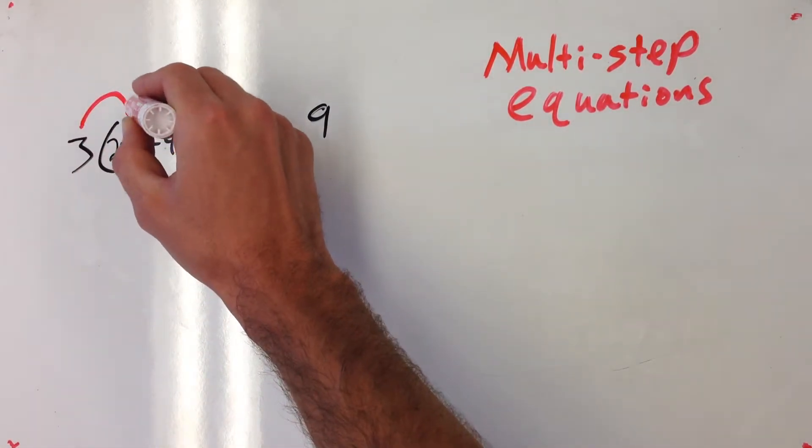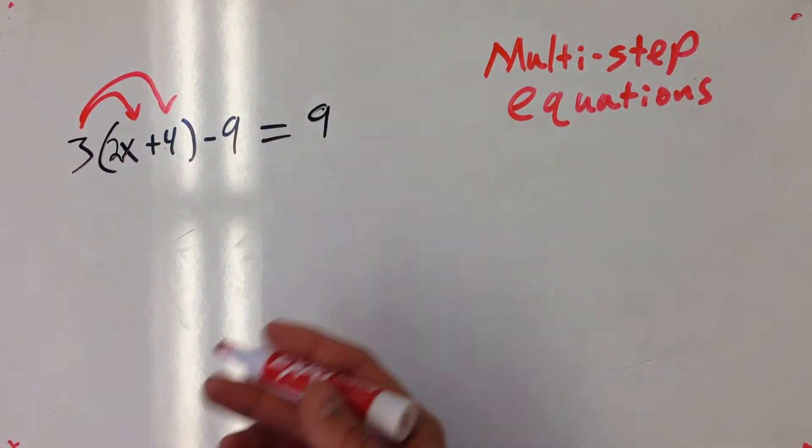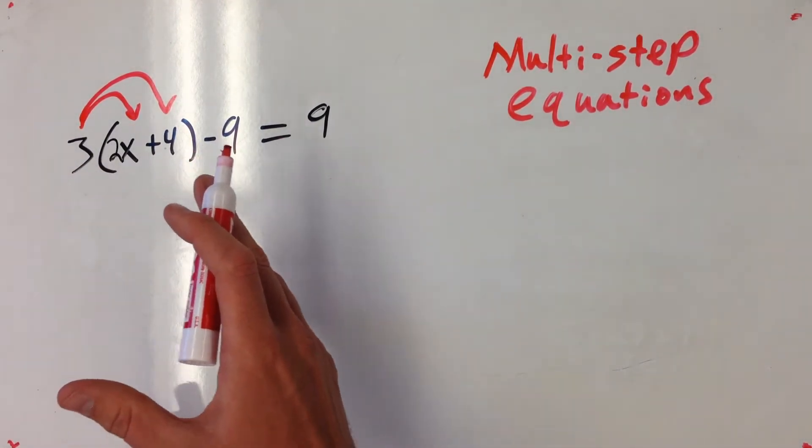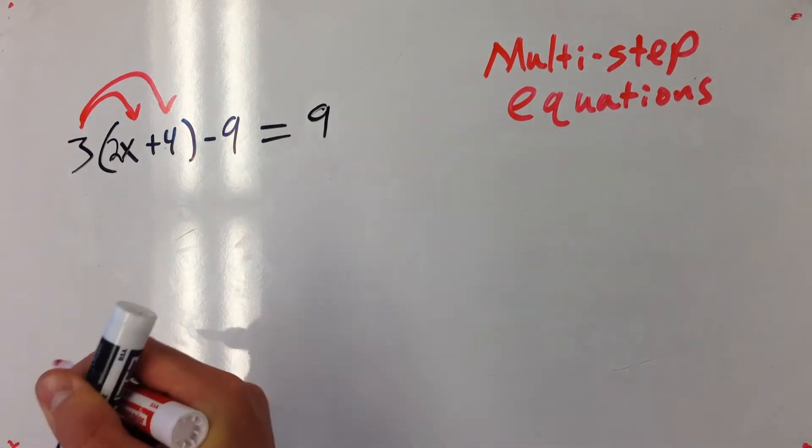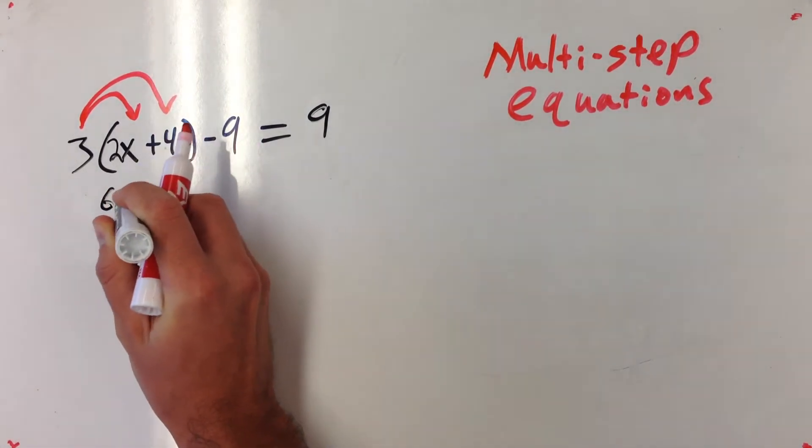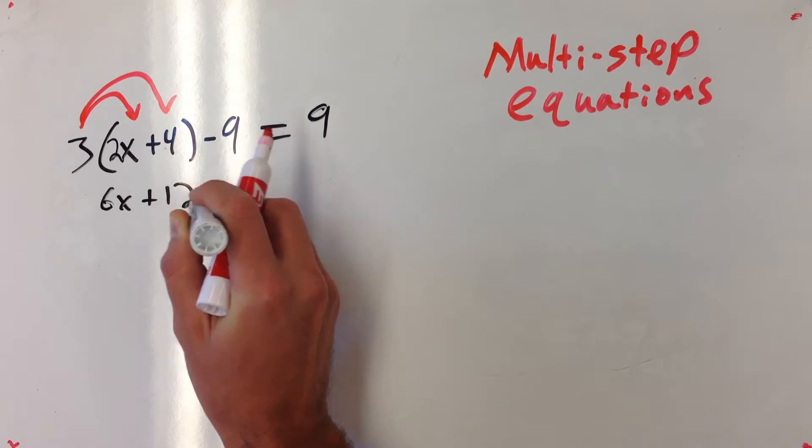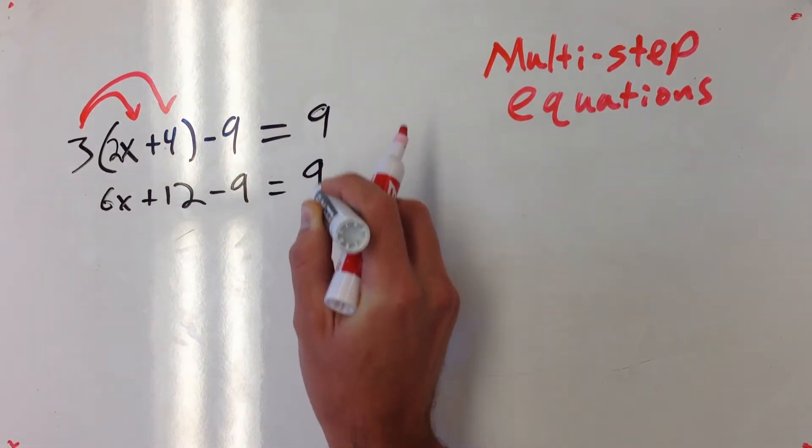My move is I've got to do this distribution, I'm going to multiply both of those, this is 3 times everything inside that. So I'm just going to break that apart and actually multiply it. And watch what I get, I get 6x plus 12 minus 9 equals 9.